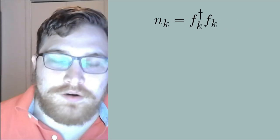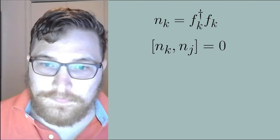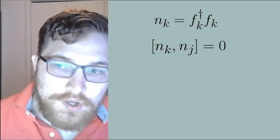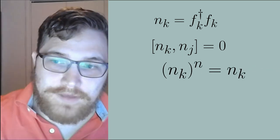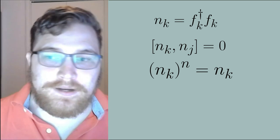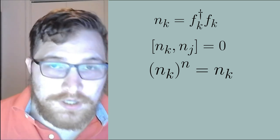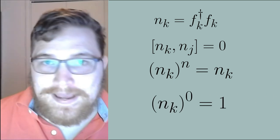Firstly let's note that the number operators commute with each other even if they're on different lattice sites. Also for any non-zero positive integer n we have that if we take the number operator to the power of n we just recover back the number operator. And if we raise it to the power of zero the number operator that is we get back one.